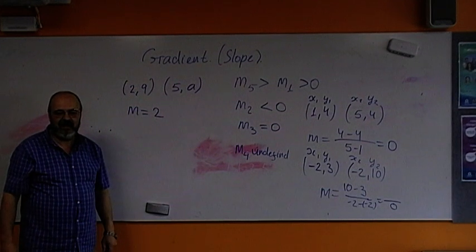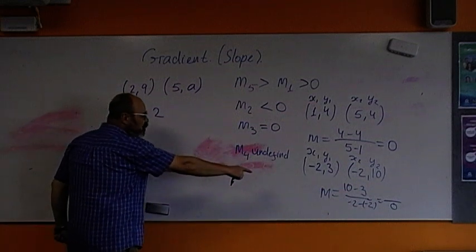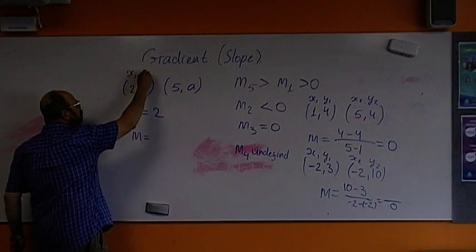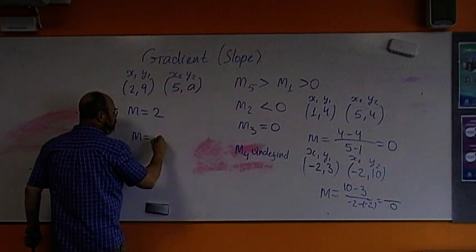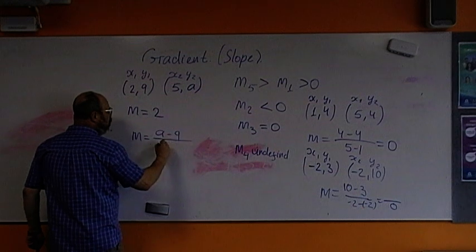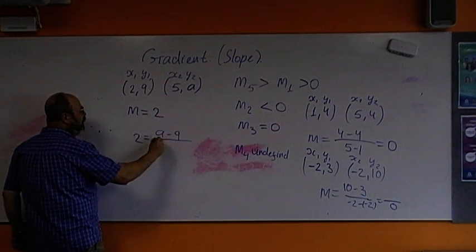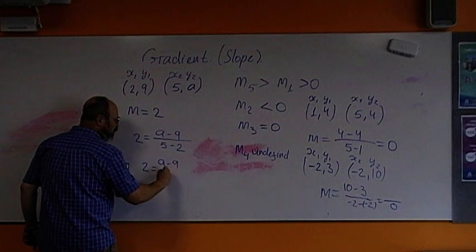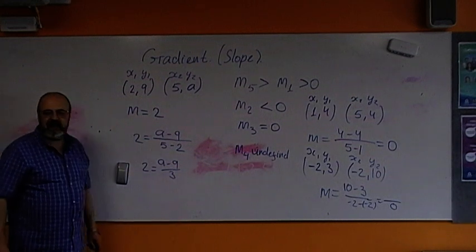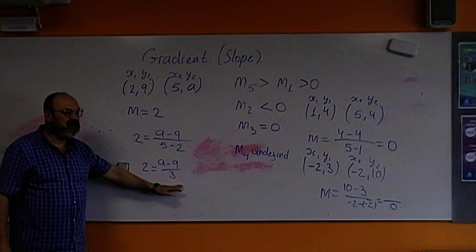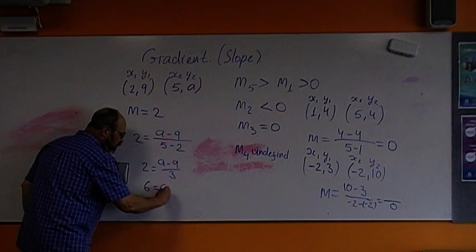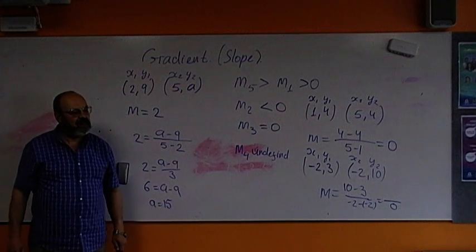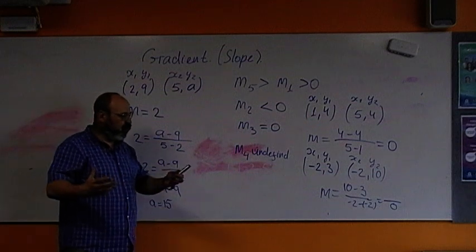Well, wouldn't two equal a minus nine over five minus two? So, we substitute using the formula of gradient. M equal, we have x1, y1, x2, y2. A minus nine over. And gradient is two. Two equal a minus nine over five minus two. So, two equal a minus nine over three. Two times three equals six. Six equals a minus nine. We add nine. A equals fifteen. Makes sense?